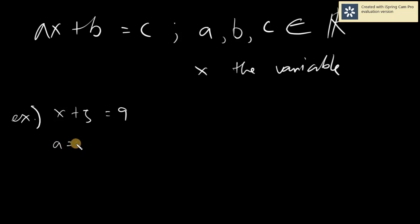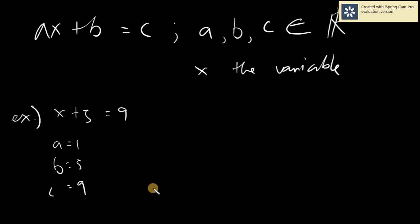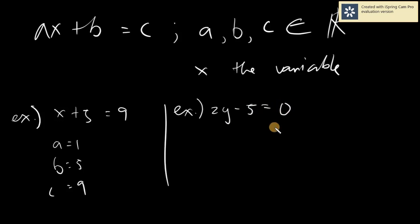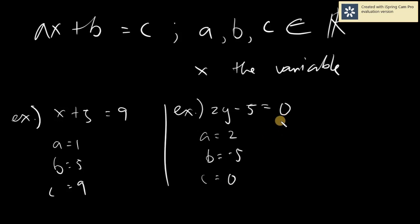Our B equals 5 and our C equals 9. Another example: 2Y minus 5 equals 0. Our A equals 2, our B equals negative 5, and our C equals 0, because there is nothing on the right side.